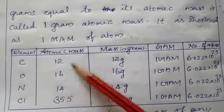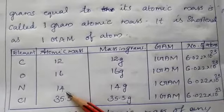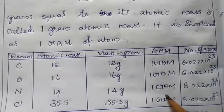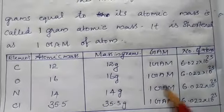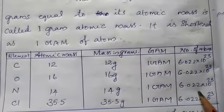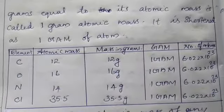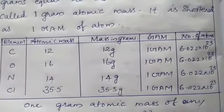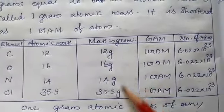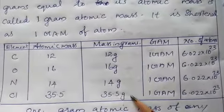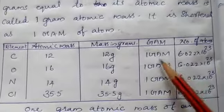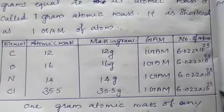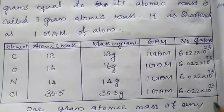For nitrogen: atomic mass 14, mass 14 g, equals 1 GAM, and the number of atoms is the same — 6.022 × 10²³. For chlorine: atomic mass 35.5, mass 35.5 g, equals 1 GAM, and the number of atoms is also the same.